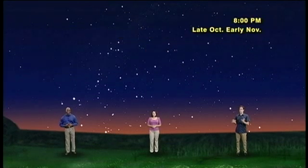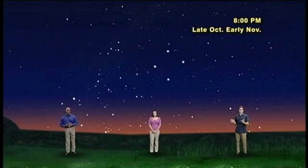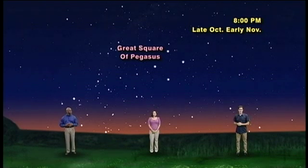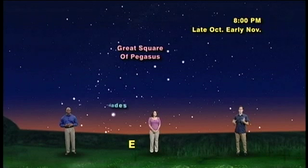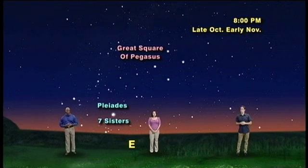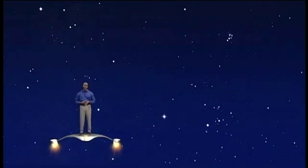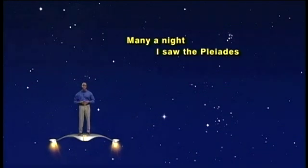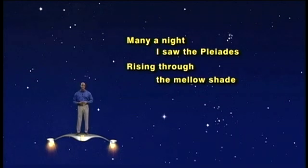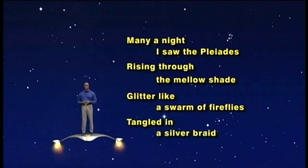If you go out in early evening in late October and early November, you'll see the four stars which mark the great square of Pegasus almost overhead. And if you look lower in the sky toward the east, you'll see what looks like a shimmering little cluster of stars called the Pleiades, the seven sisters, which some people say looks like a bunch of cosmic grapes or a miniature dipper. My favorite description, however, is Alfred Lord Tennyson's poem when he wrote: 'Many a night I saw the Pleiades, rising through the mellow shade, glitter like a swarm of fireflies, tangled in a silver braid.'